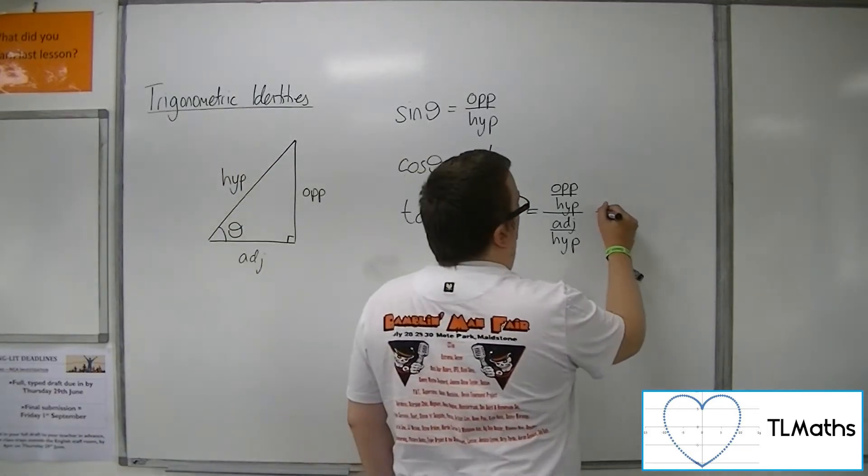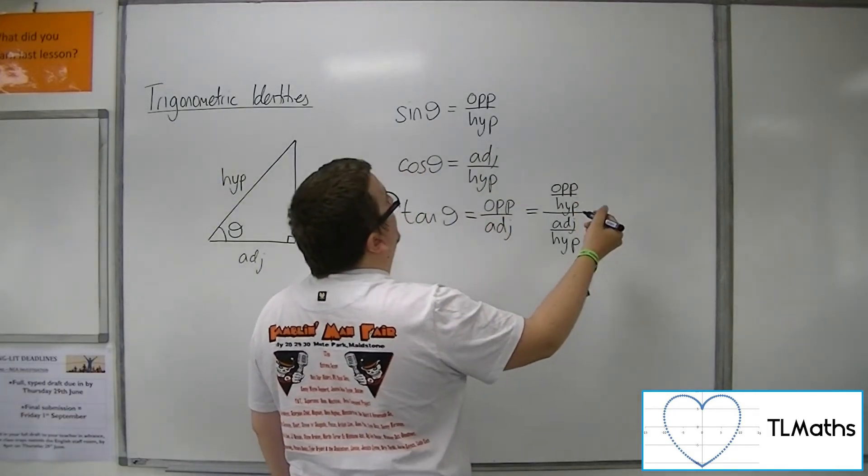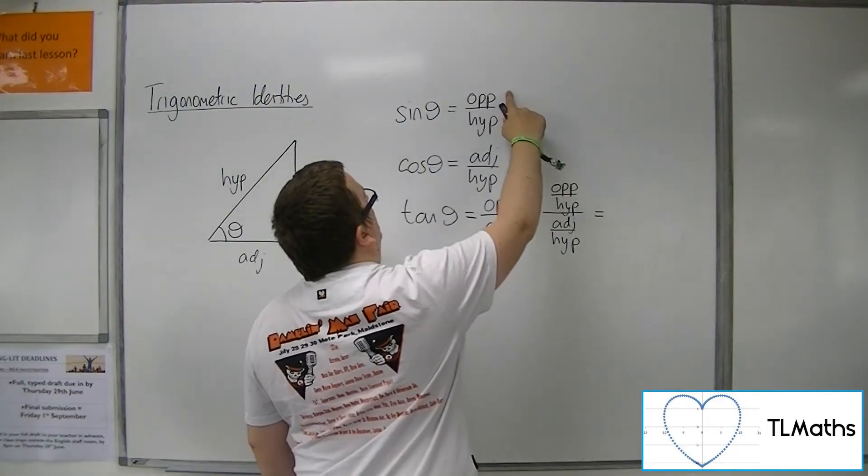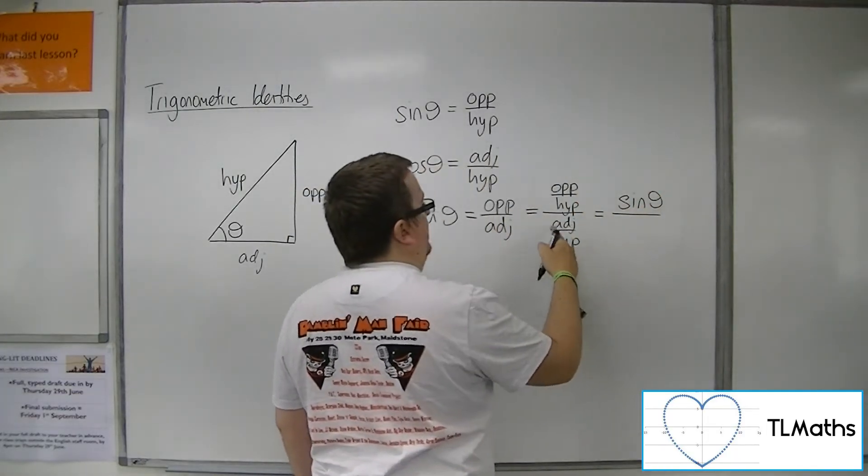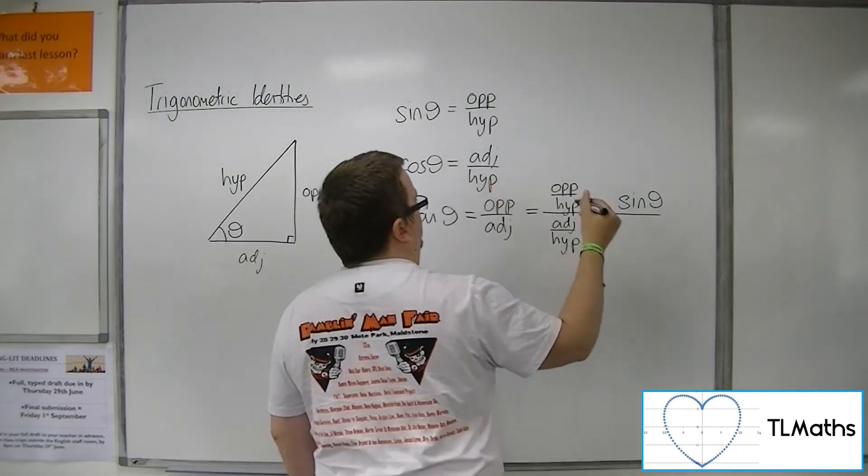I know that the opposite over the hypotenuse is sine, so the numerator is sine. And the adjacent over the hypotenuse is cosine.